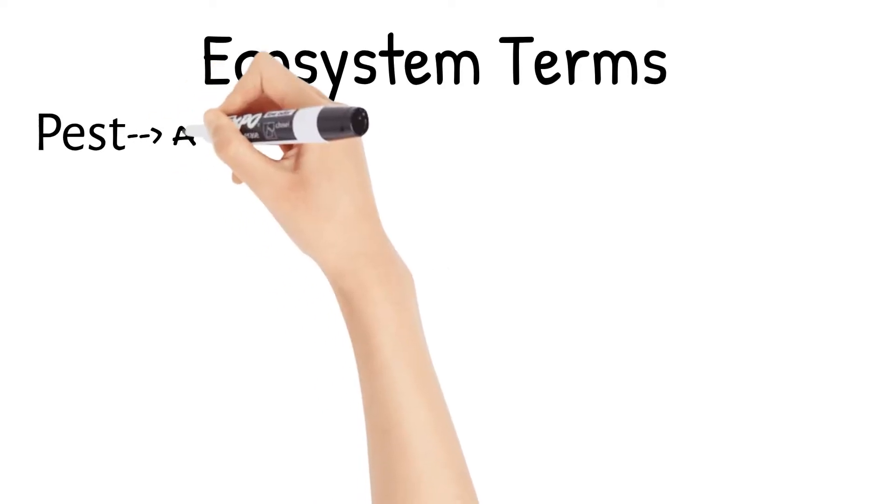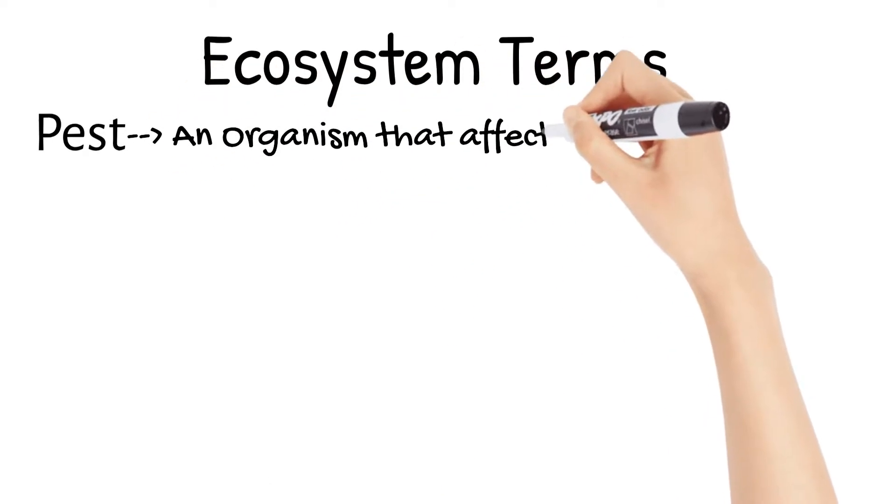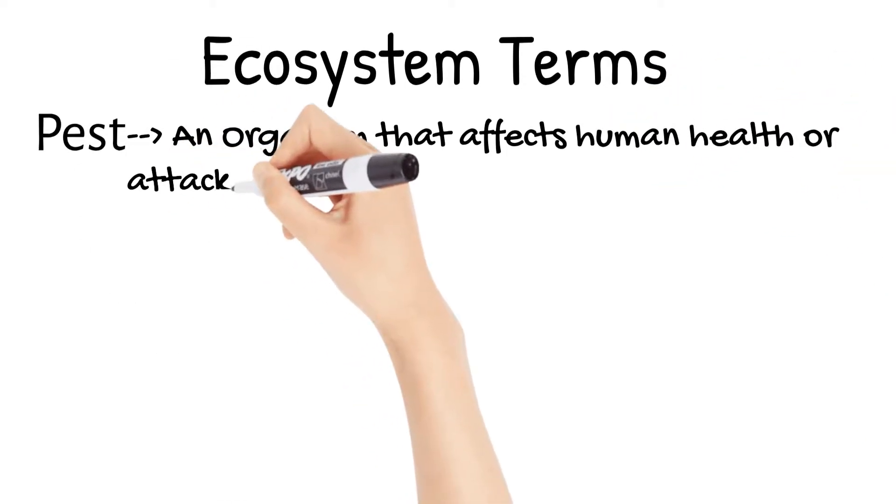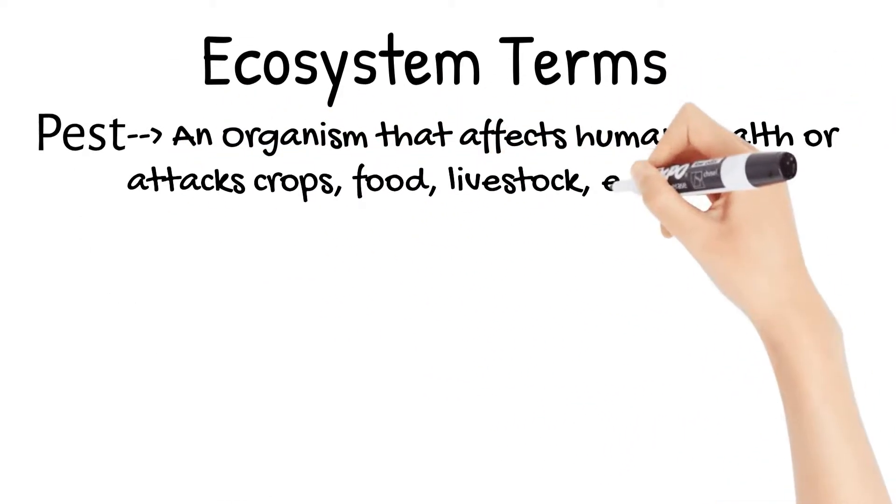Let's start with pests, and no, they're not just annoying little brothers. A pest is an organism that affects human health or could attack crops, food, livestock, etc. that we need.